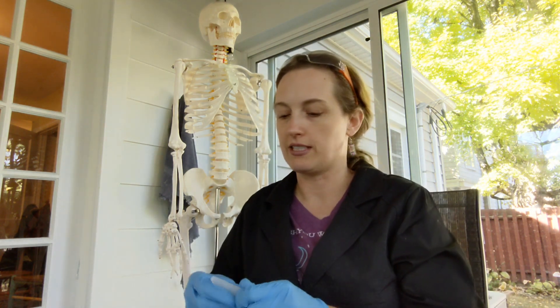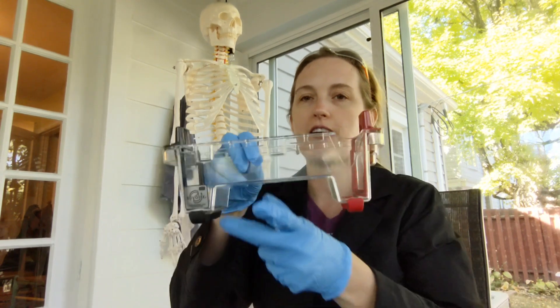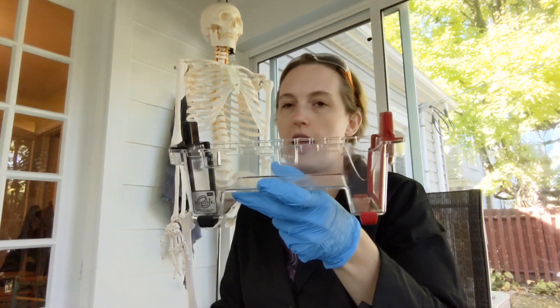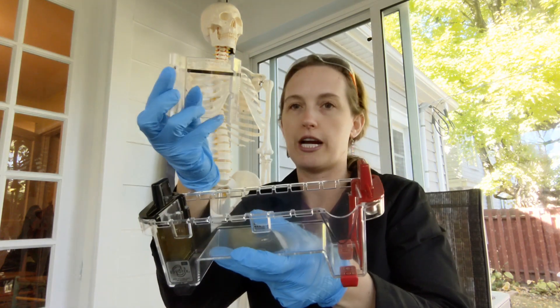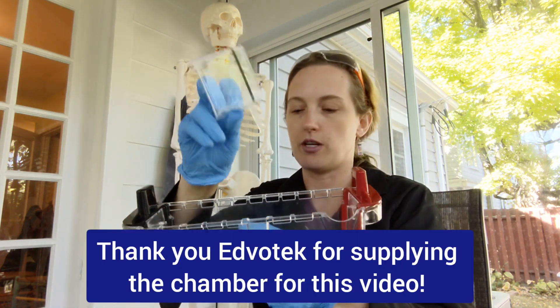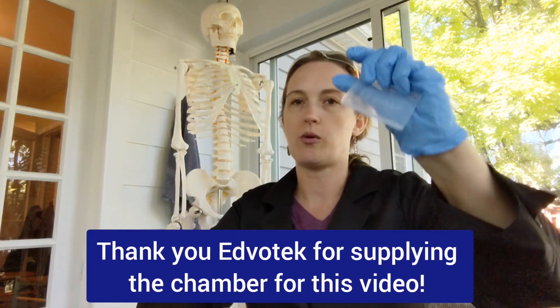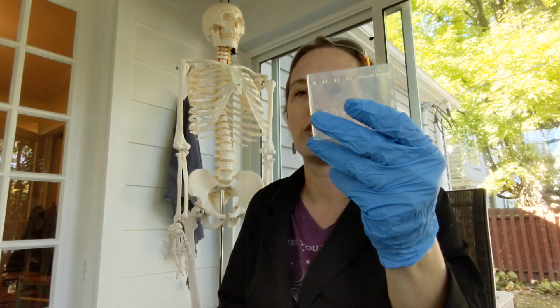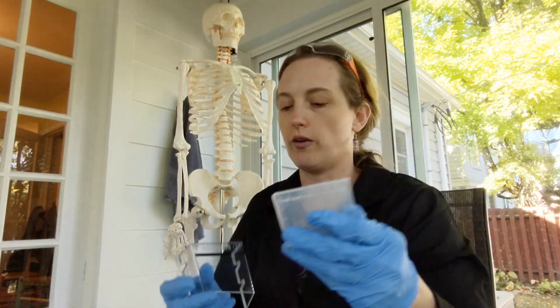So here's what we're going to be using today. First of all, I have my Edvotec M12 gel electrophoresis chamber and I have a small tray for a 7x7 cm gel. I also have a practice gel. These come with the chambers and they're really good for gel loading practice before you do the real thing.